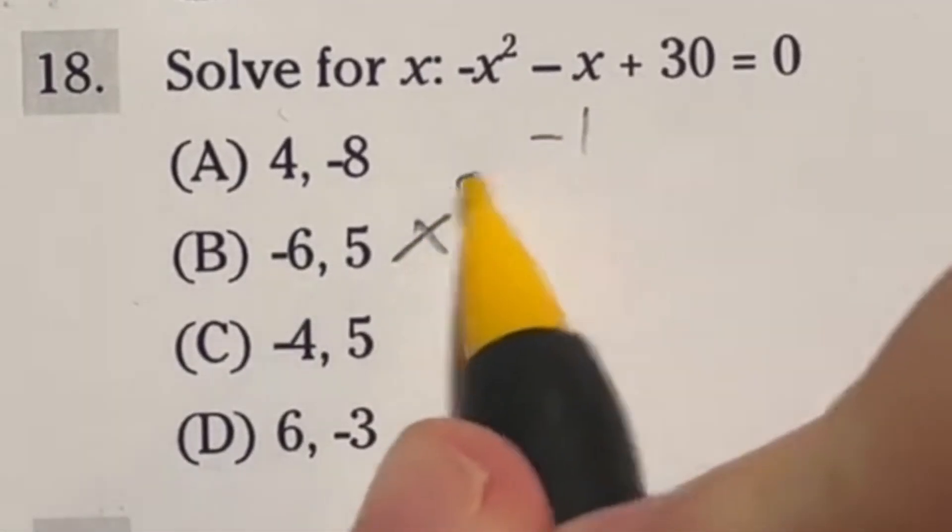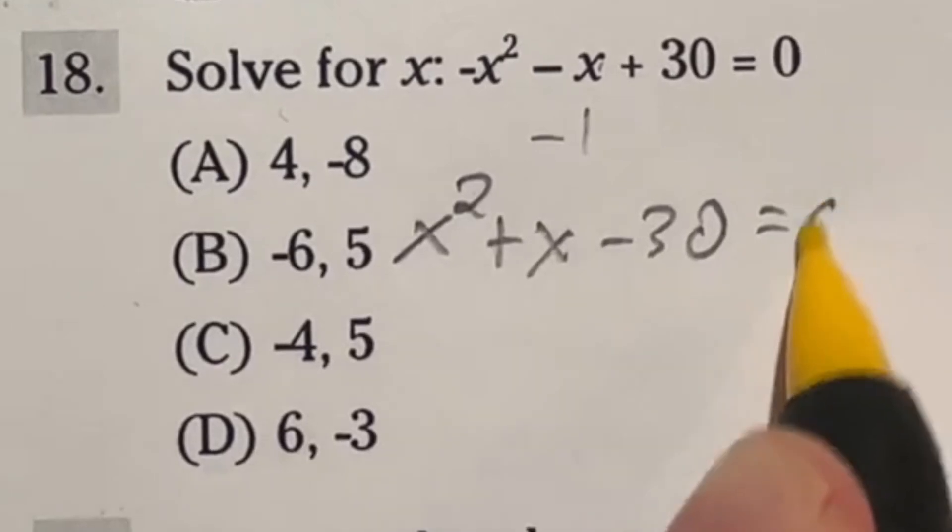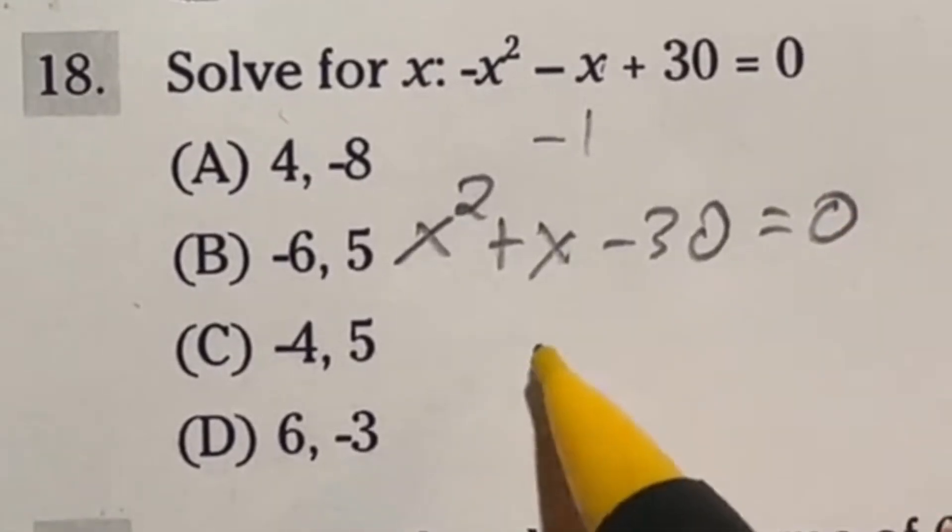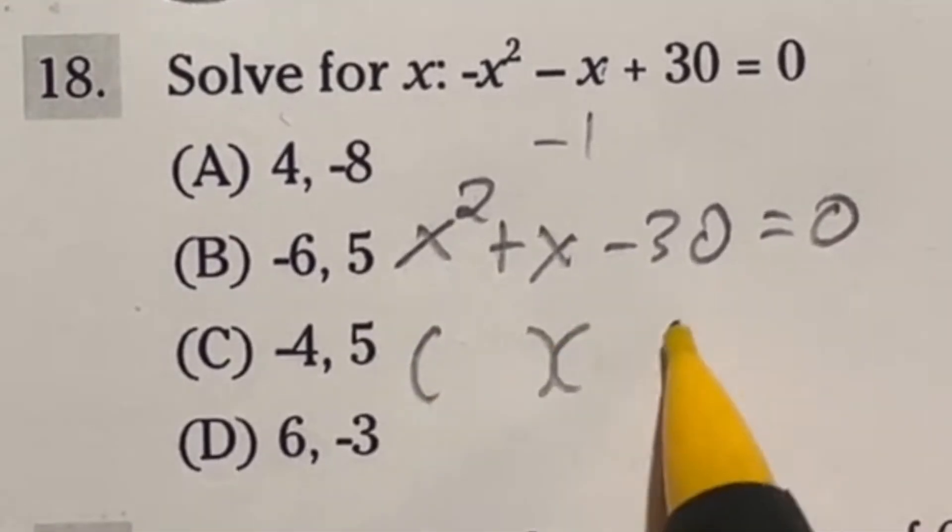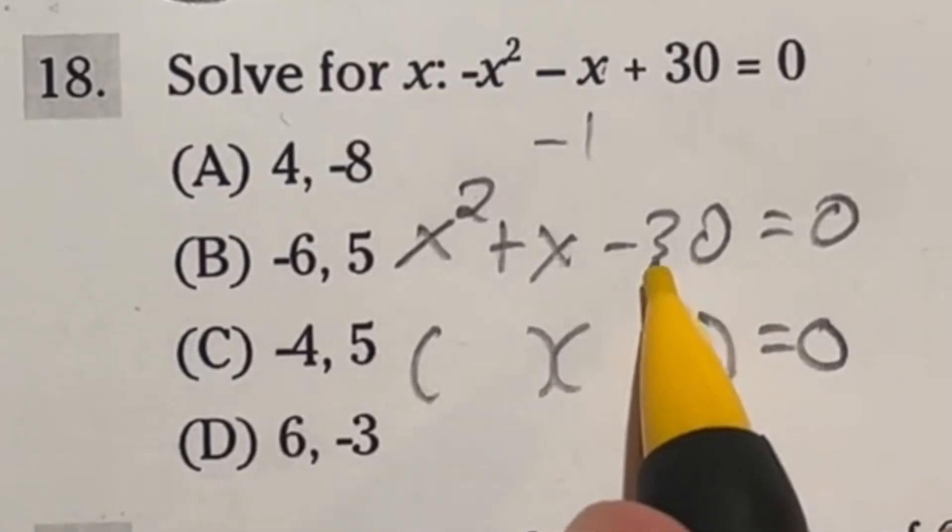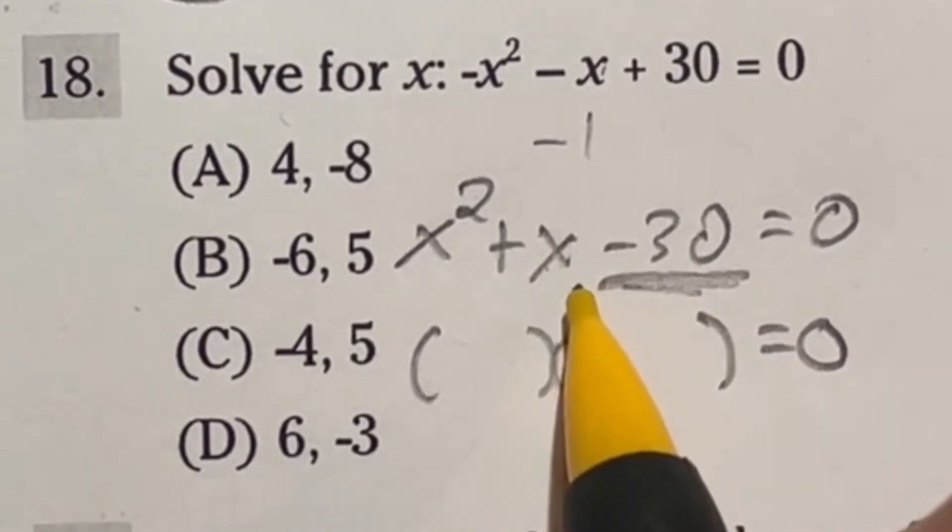All right, now we can just straight up factor this. So what does factoring mean? It means you split it into two different things, set them equal to zero, and I need to find two numbers that multiply to negative 30 and add to a positive one. So let's go ahead and take a look at this. What two numbers would multiply to negative 30 and add to a positive one?